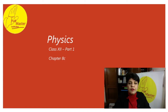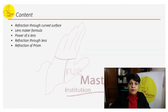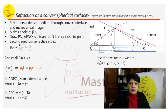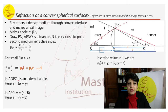Hello friends, we will be covering the following topics: refraction through curved surface, lens maker formula, power of a lens, refraction through lens, and refraction of prism. In this experiment we have placed a convex lens where one side is rarer and the other side is denser.